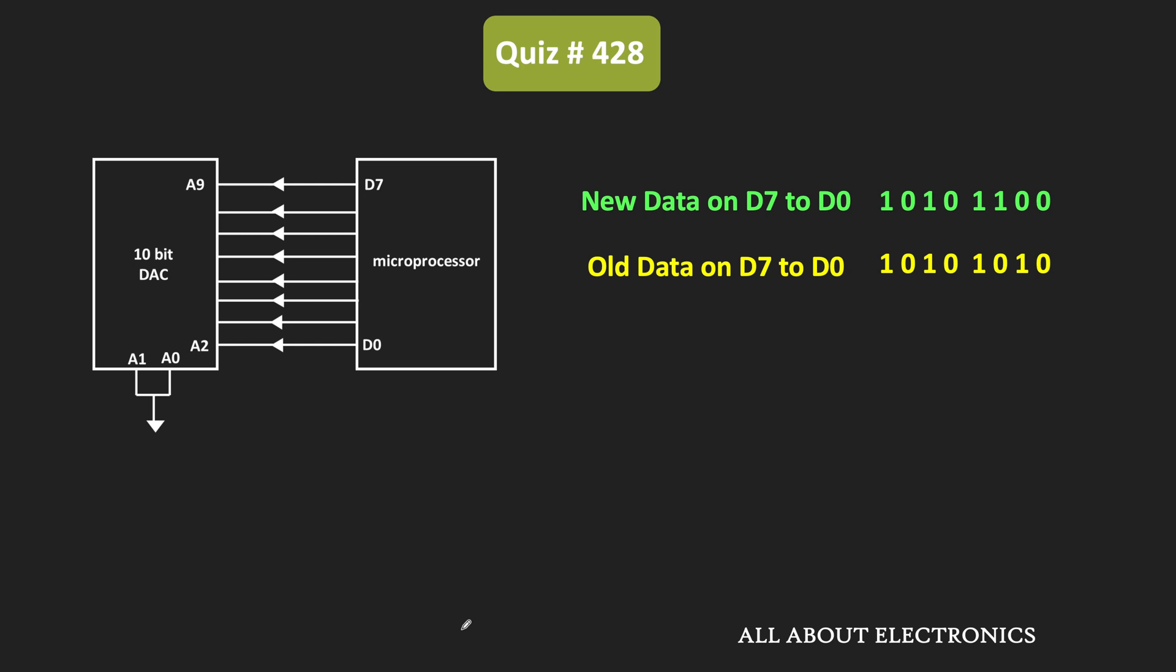In the first case, these are the 10 bits. We also need to consider these A1 and A0 lines. Similarly, in the second case, this is the 10-bit data.